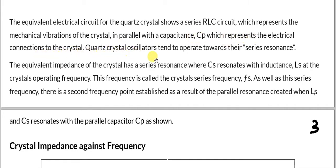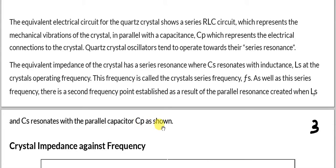This frequency is called the crystal series frequency Fs. As well as the series resonance frequency, there is a second frequency point established as a result of the parallel resonance, created when Ls and Cs resonate with the parallel capacitor Cp, as shown in the figure.